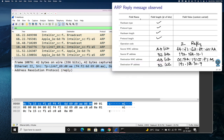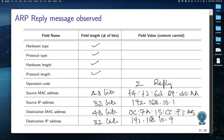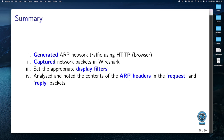Concluding: we generated ARP network traffic using the browser through HTTP, which forced the MAC address of the gateway to be discovered using ARP. We then captured it in Wireshark, set the appropriate display filter as ARP, and looked at the ARP headers for both the request and the reply packets. The request was a broadcast message going to everybody, and the reply was a specific message coming back to my machine from the gateway, with the MAC address of the gateway. We'll end here — thank you, see you in the next video session.